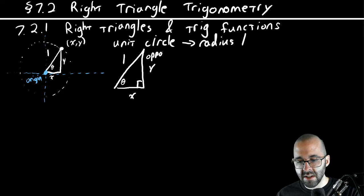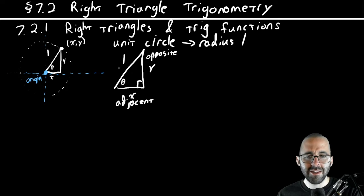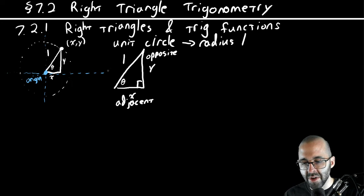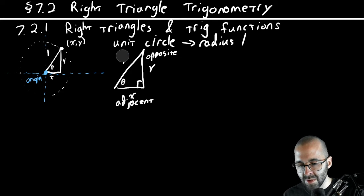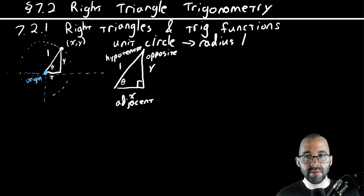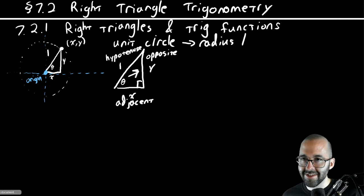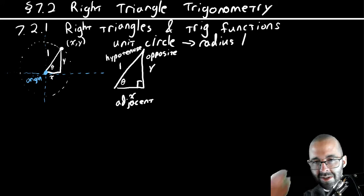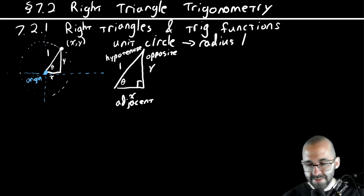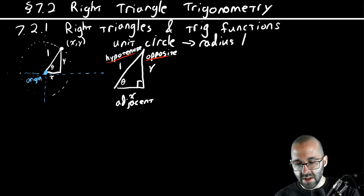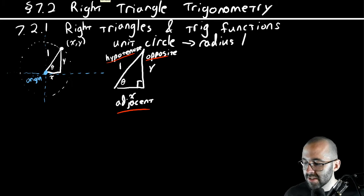Y is known as the opposite side. X is known as the adjacent side. The hypotenuse is the side opposite the right angle — in this case, side length one. Adjacent because it's the side connected to the angle; opposite because it's opposite the angle. These names depend on what angle we're talking about — if theta is somewhere else, all those names change.